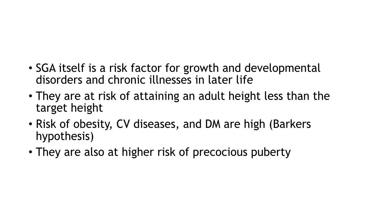SGA itself is a risk factor for growth and development disorders and chronic illnesses in later life. These children are at high risk of attaining an adult height less than their target height. According to Barker's hypothesis, they have an increased risk of obesity, cardiovascular diseases, insulin resistance, and diabetes mellitus in later life — though this will be discussed in detail in the IUGR session. These SGA babies are also at high risk of precocious puberty.